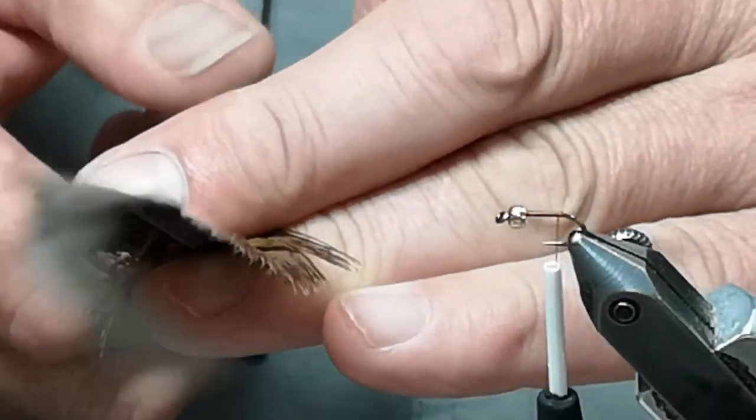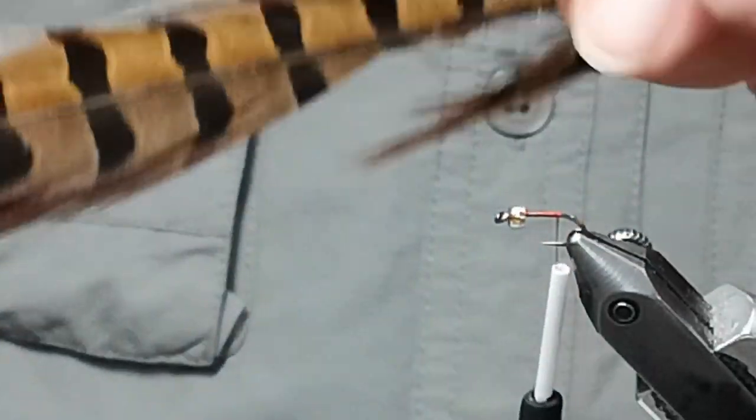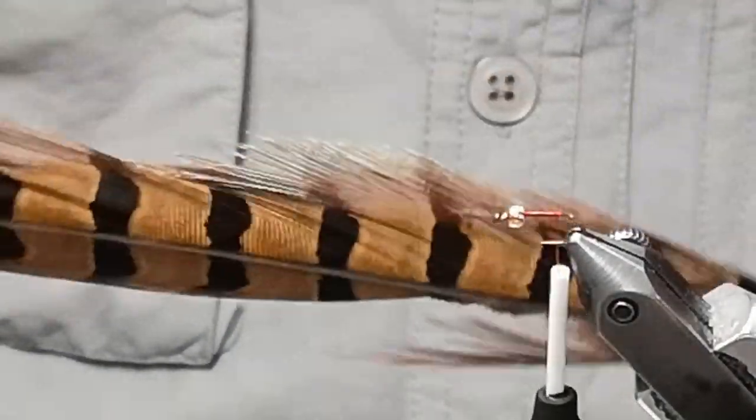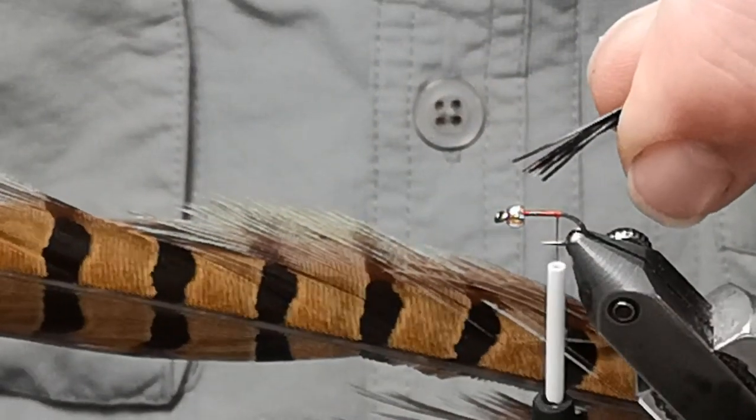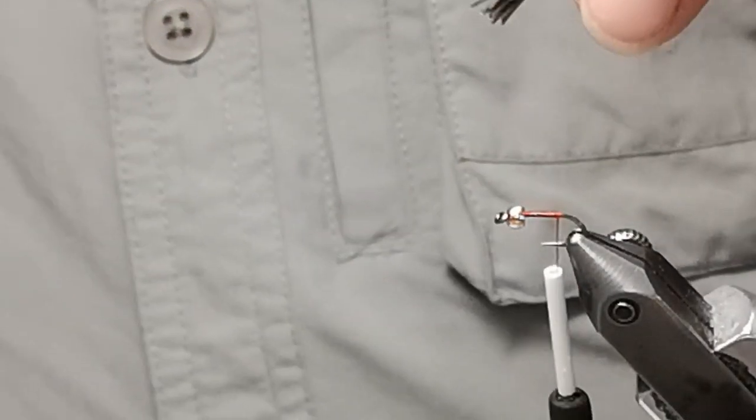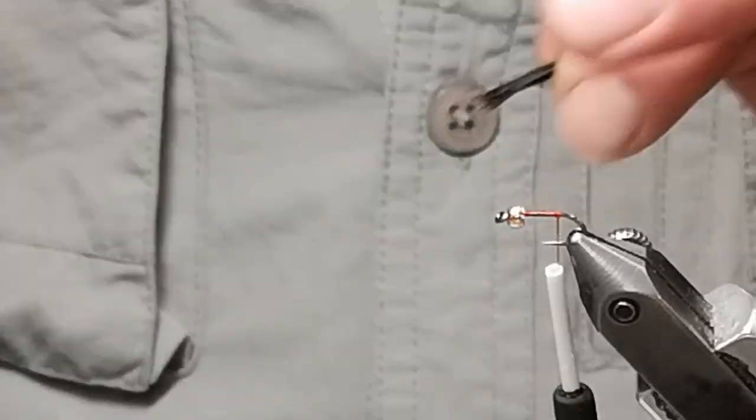We need just a little bit of pheasant tail. I cut off about a quarter inch of pheasant tail. It's probably a half dozen to eight strands, and that's what we're going to wrap the body with.